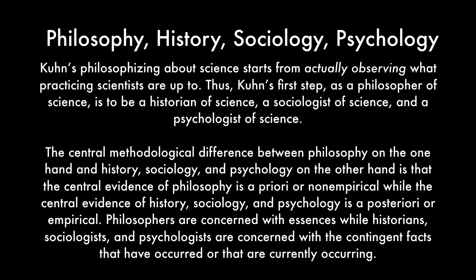The central methodological difference between philosophy on the one hand and history, sociology, and psychology on the other is that the central evidence of philosophy is a priori, or non-empirical, while the central evidence of history, sociology, and psychology is a posteriori, or empirical. Philosophers are concerned with essences, while historians, sociologists, and psychologists are concerned with the contingent facts that have in fact occurred or are currently occurring.